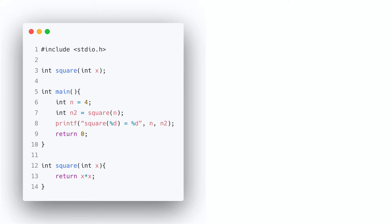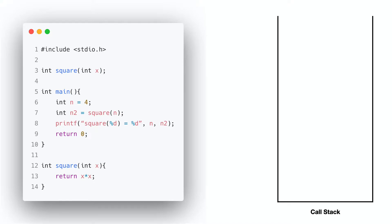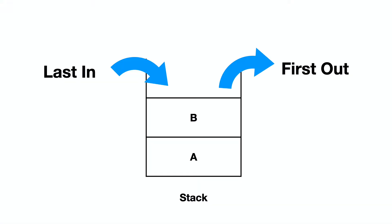For a recursion program, the operating system will keep the stack data structure. The stack is called memory. It is called a data structure — last in, first out, or LIFO. This is an example of this.